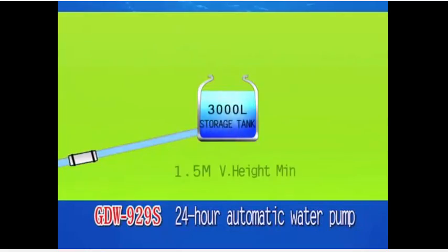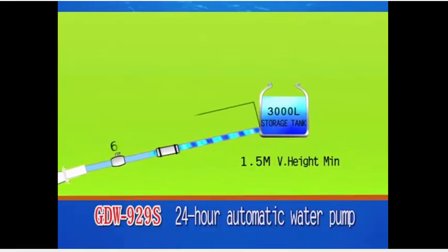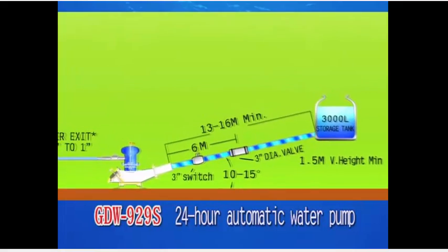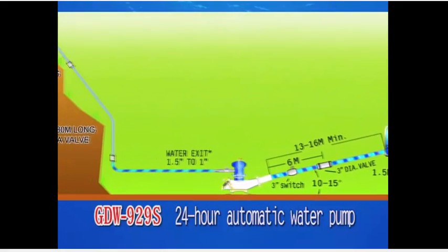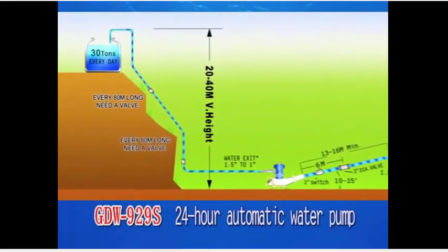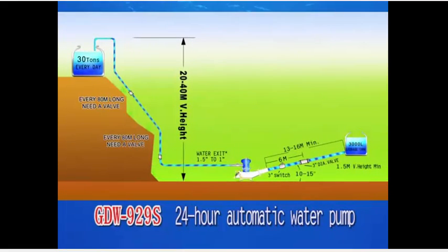The GDW-929S 24-hour automatic water pump has been proven in actual trials to reliably pump water up to a height of 40 meters. It can pump 25 to 30 tons of water every day.